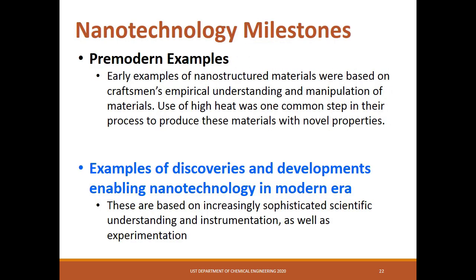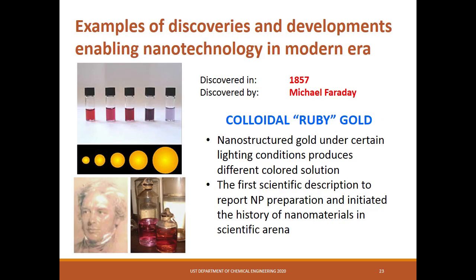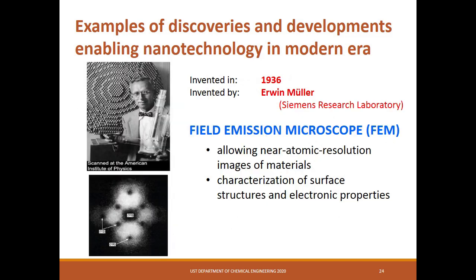Recent discoveries and inventions led to the modern era examples of nanotechnology, where sophisticated equipment is used to understand and explain the concept. In 1857, Michael Faraday explored colloidal ruby gold. At different nanometer sizes, gold transmits and reflects different colors, and his research is the first scientific report describing nanoparticle preparation. Erwin Muller is the first person to experimentally observe atoms. He invented the field emission microscope, or FEM, in 1936, allowing near-atomic resolution images of materials.